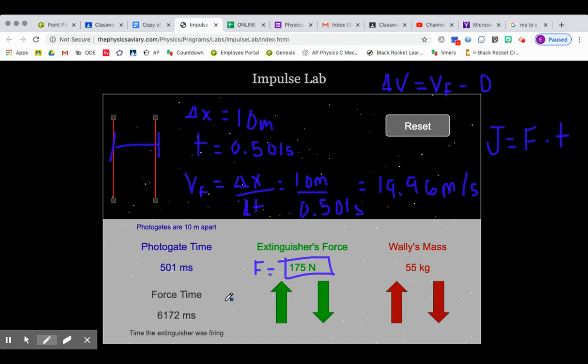And you're going to multiply it by the amount of time that that force acted on the astronaut, to increase his velocity from 0 to 19.96 meters. So you'll multiply those two values to find the impulse.